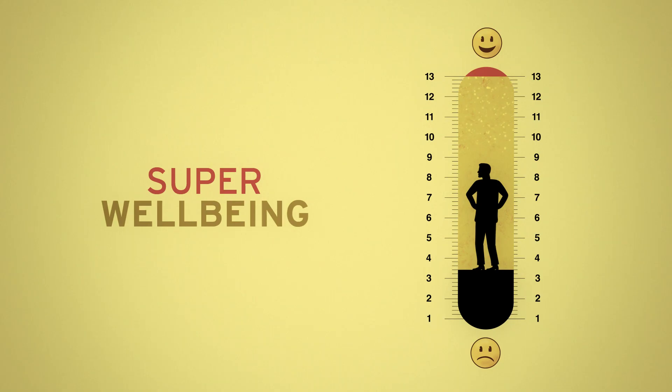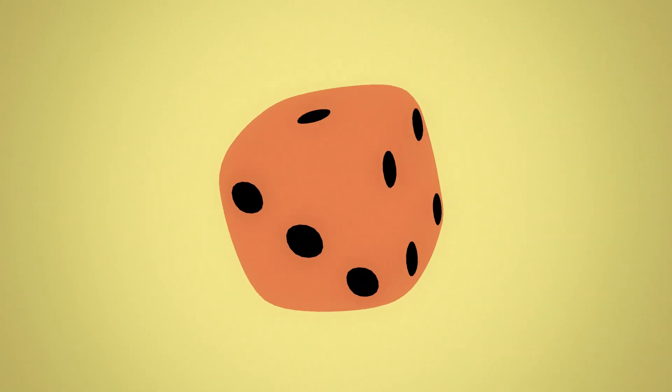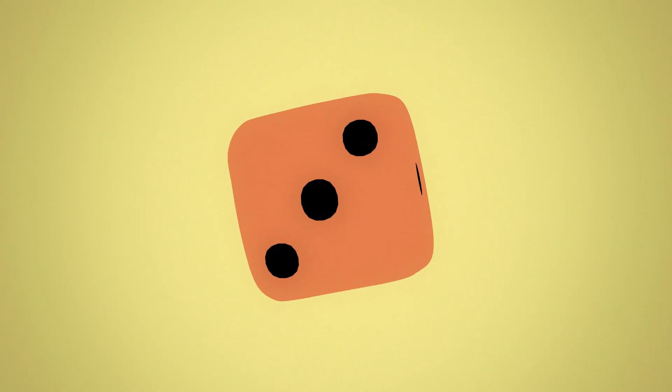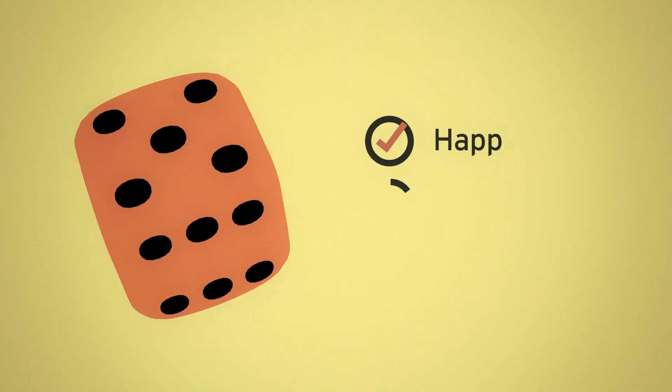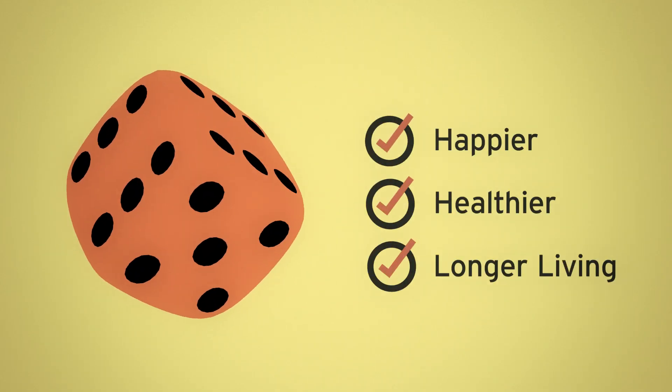At present, every child is a roll of the genetic dice. Pearce argues that the least we can do is load the dice in our favor to create happier, healthier, longer living humans.